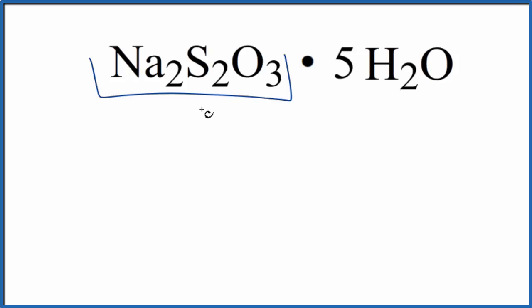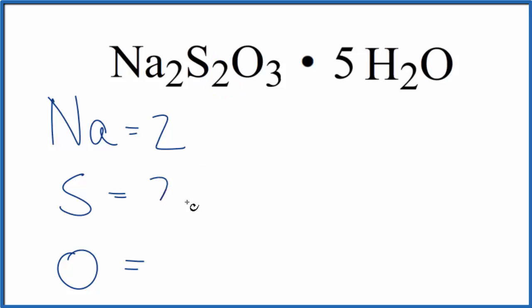number of atoms in sodium thiosulfate. For sodium thiosulfate, let's write the elements: Na, S, and O. For the sodium we have two atoms, for the sulfur we have two, and the oxygen we have three. So we have